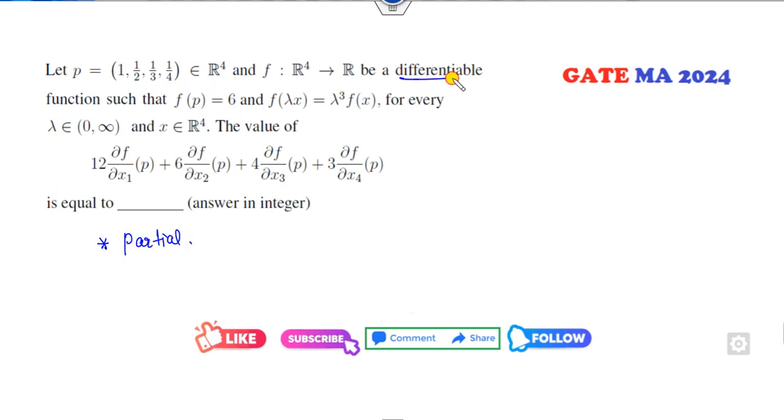Second thing is the function should be differentiable. And what does this imply to you? This is the condition of the homogeneous function, that means f is my homogeneous function and the homogeneous function has degree 3.